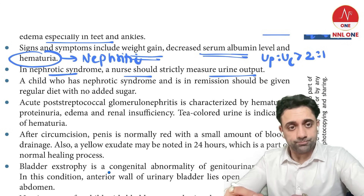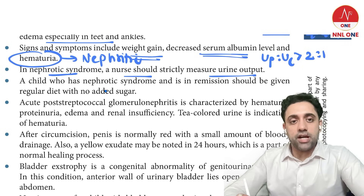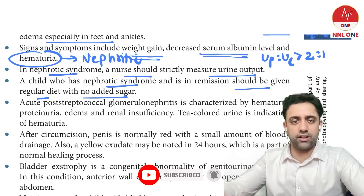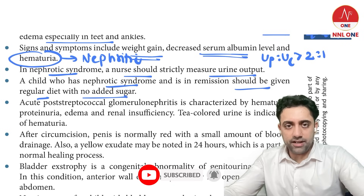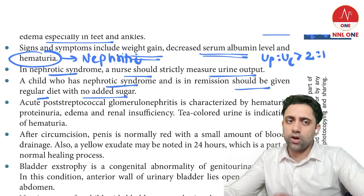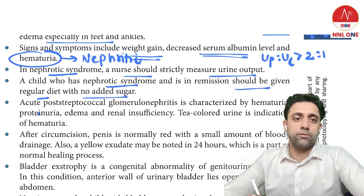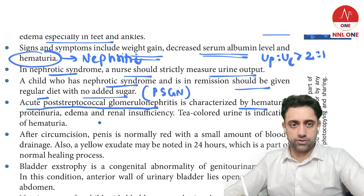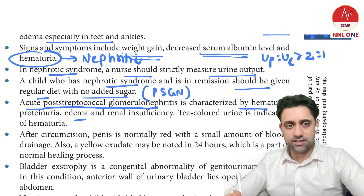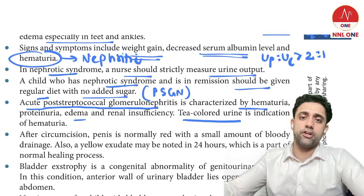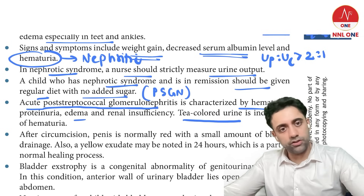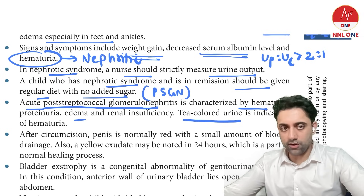In nephrotic syndrome in remission, the child should be given a regular diet with no added sugar. In acute post-streptococcal glomerulonephritis (PSGN), the patient will have hematuria, proteinuria, edema, and renal insufficiency. Cola-colored or tea-colored urine is an indication of PSGN.